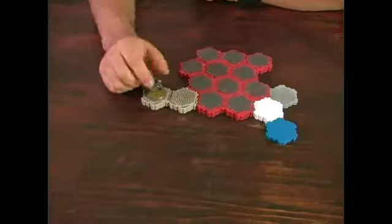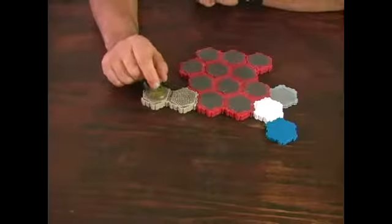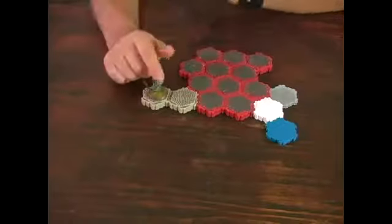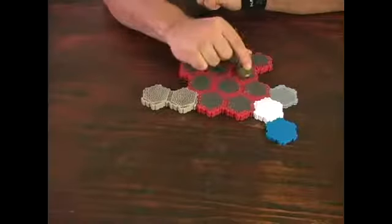Here we have our Orc guy and he has a move of five. He's going to move through the volcanic field: one, two, three, four, five.